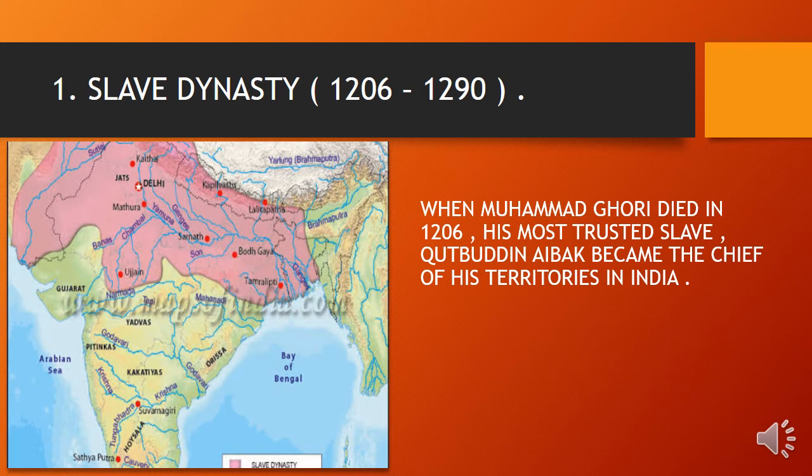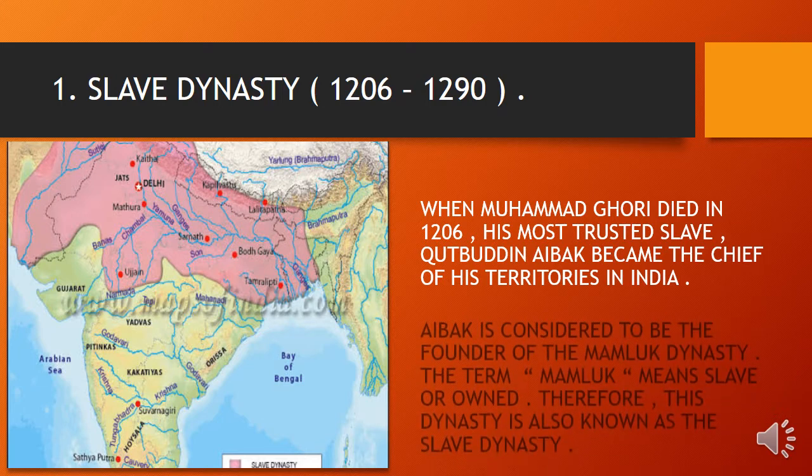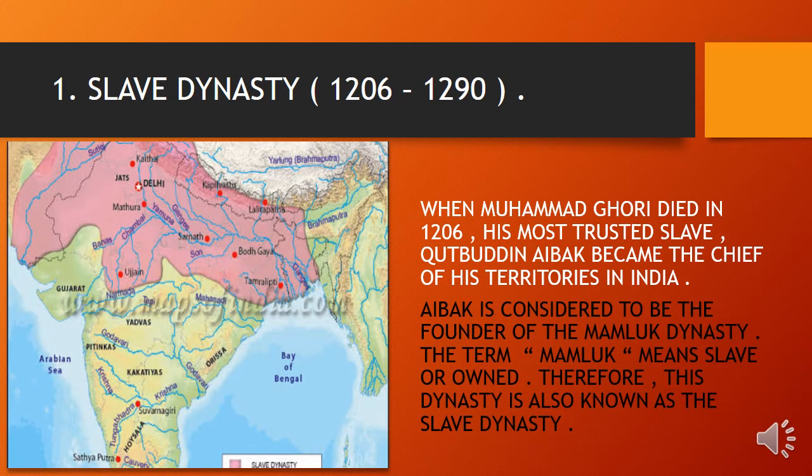When Muhammad Gauri died in 1206, his most trusted slave, Qutb ud-Din Aibak, became the chief of his territories in India. Aibak was also a slave under Muhammad Gauri and served as chief commander. Aibak is considered the founder of the Mamluk dynasty — the term Mamluk means 'slave' or 'owned,' and therefore this dynasty is also known as the Slave dynasty.